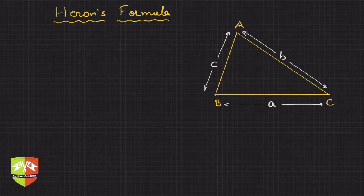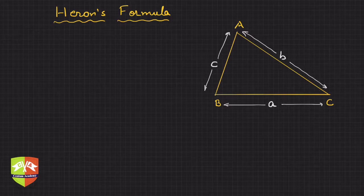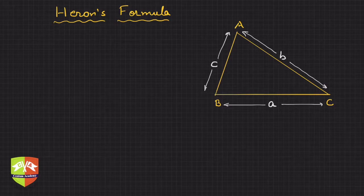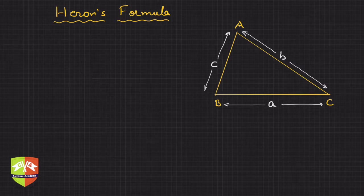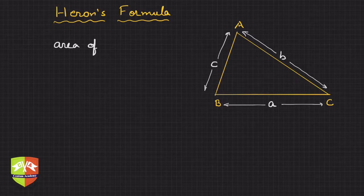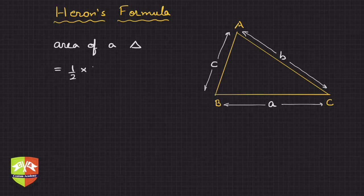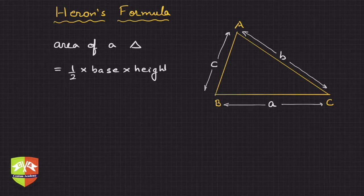Before we look into all that, let us understand what we have studied so far in terms of finding area in a triangle. You would be familiar that we have already learned a formula for finding the area of a triangle, and that is given by: area of a triangle is half into base into height.